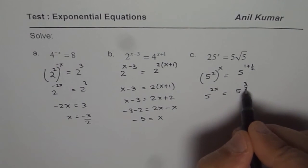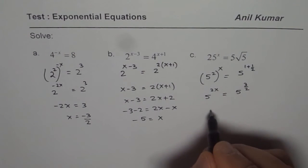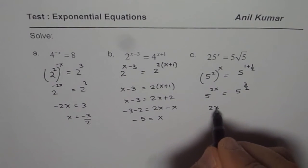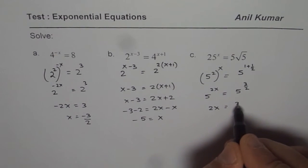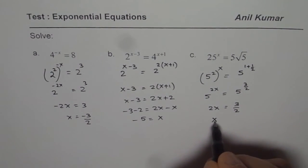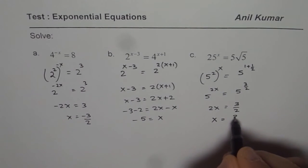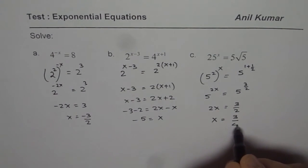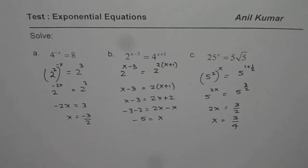Now 2x equals to 3 over 2, or x equals to 3 over 4. That is how you can simplify and solve such equations. I hope that helps.